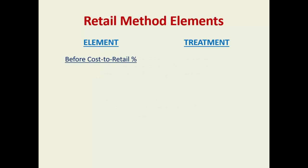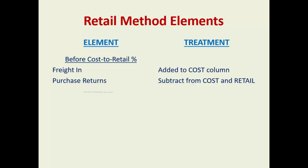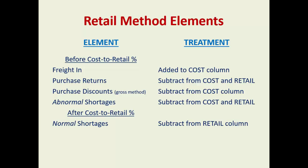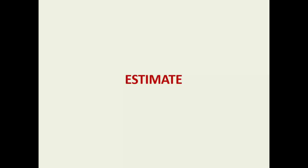Retail method elements: before the cost to retail ratio, freight in is added to the cost column. This shows how you handle purchase returns and discounts. Abnormal shortages — as opposed to normal shortages — are also noted. Make note of when and where you add them, and to which columns. Is it one column or both? Employee discounts are added to net sales. The difference between normal and abnormal shortage: normal is expected, it's normal waste; abnormal is above that amount. The key to remember is that estimations are an estimate — it's inventory.